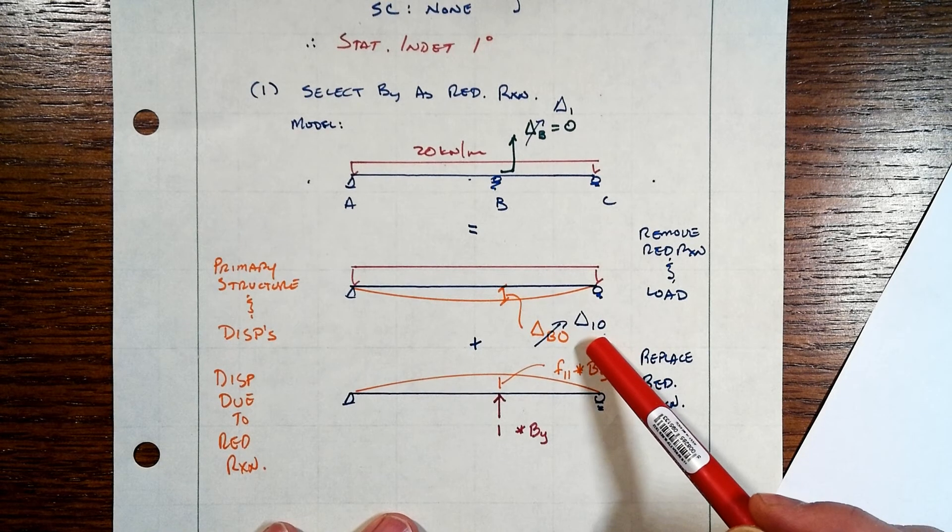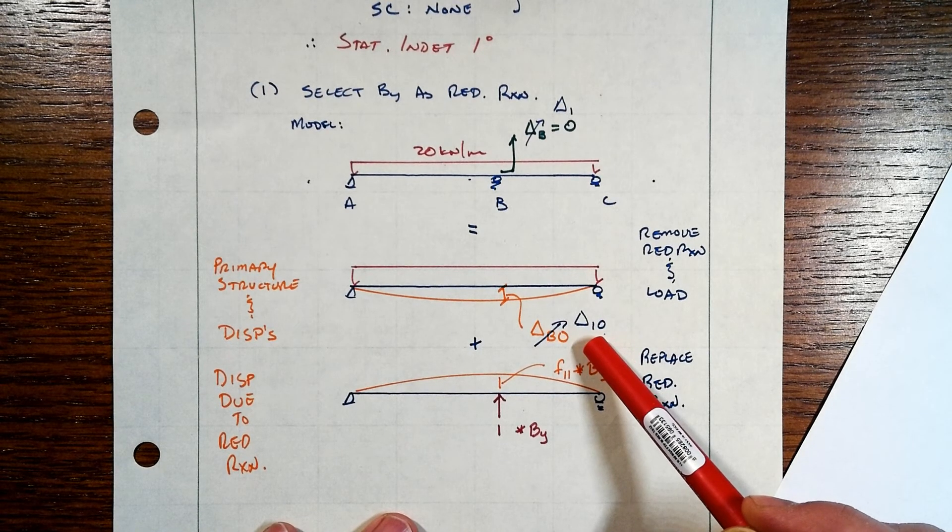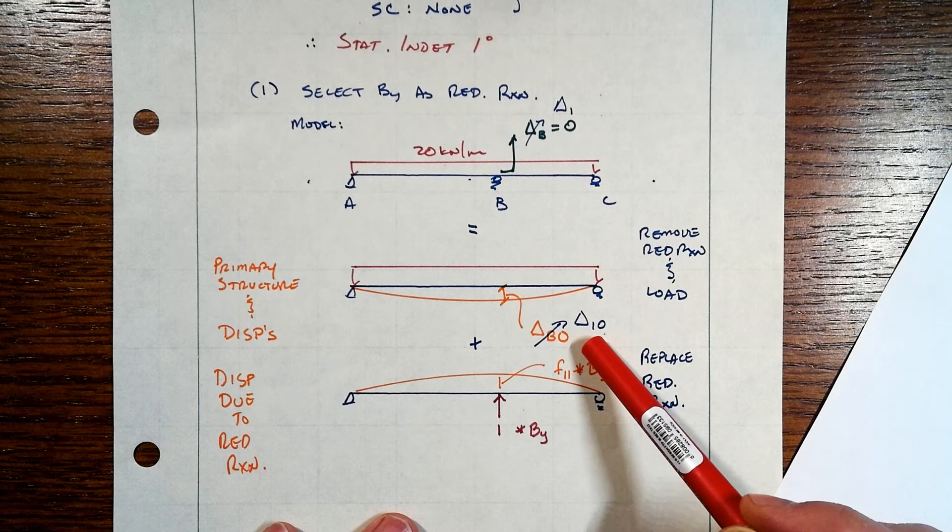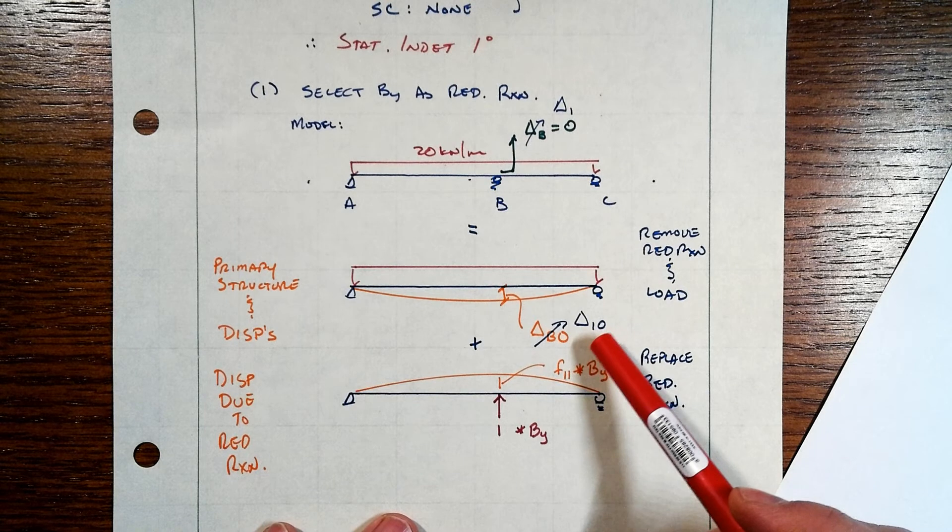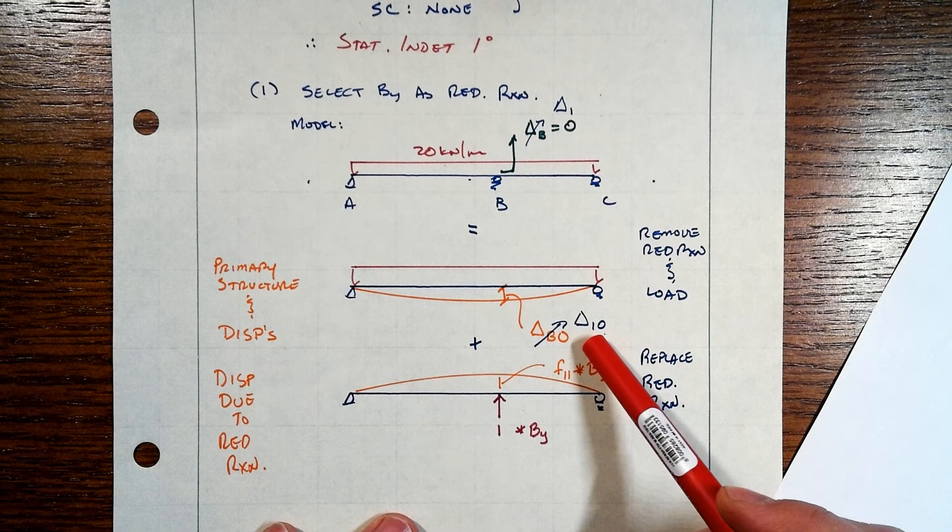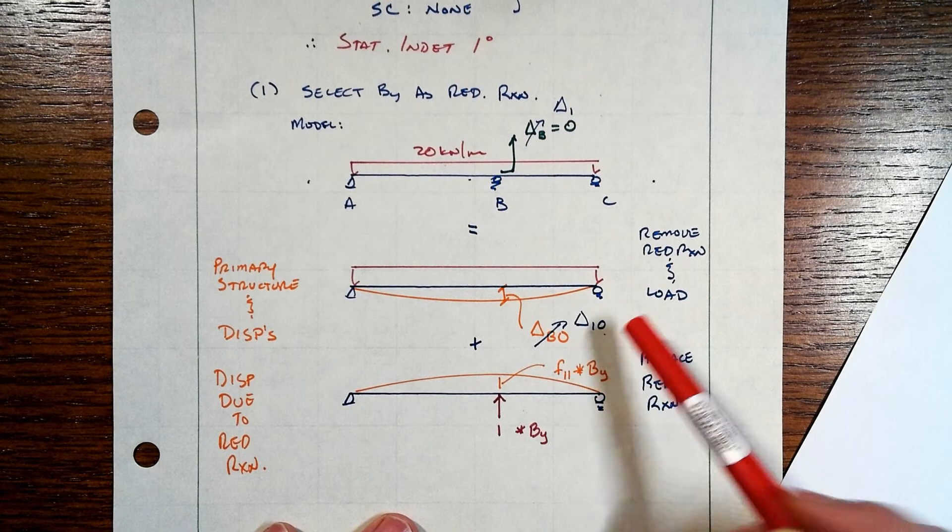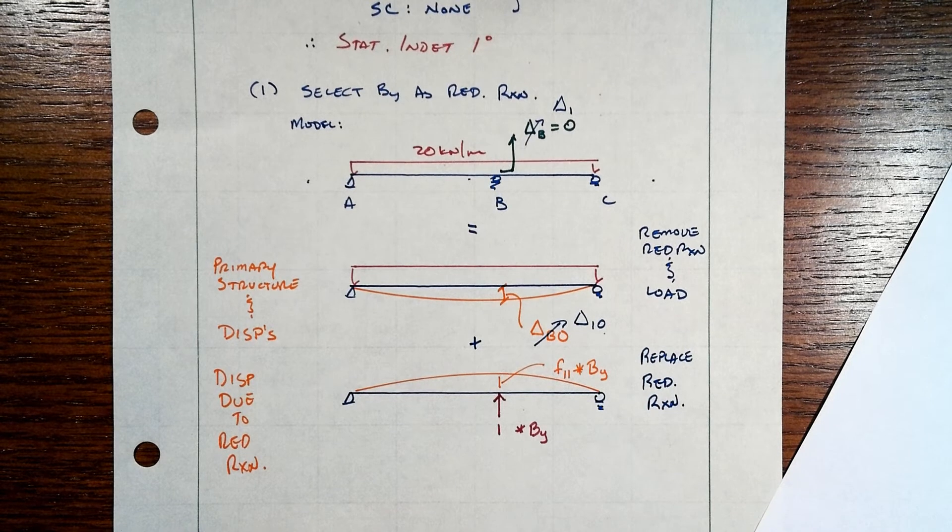One for the location that we're at, the redundant reaction location. We call that a degree of freedom. And then, and that also has a direction to it, up in this case.